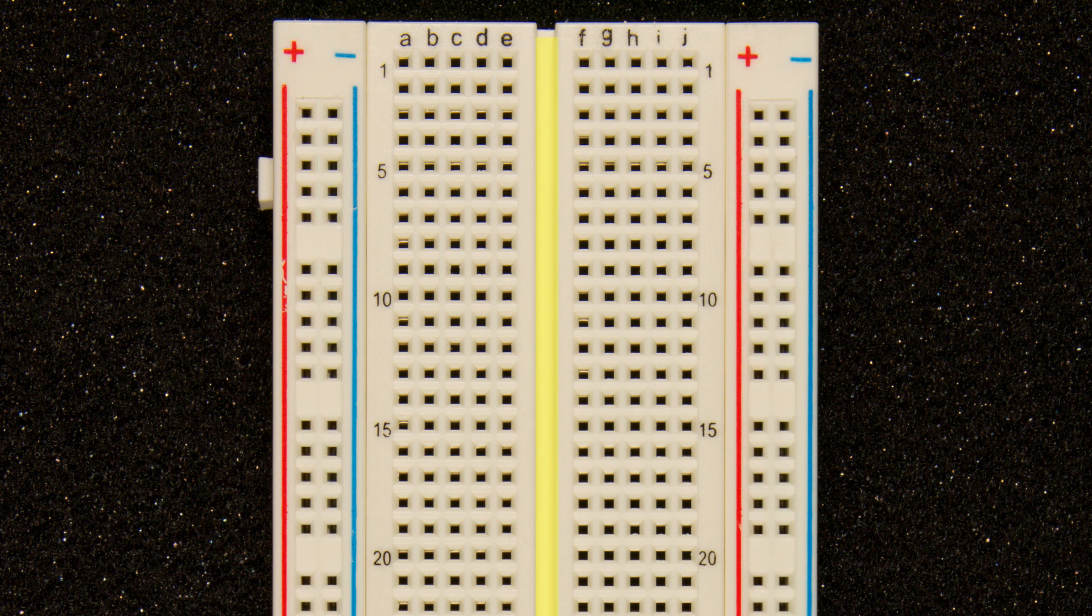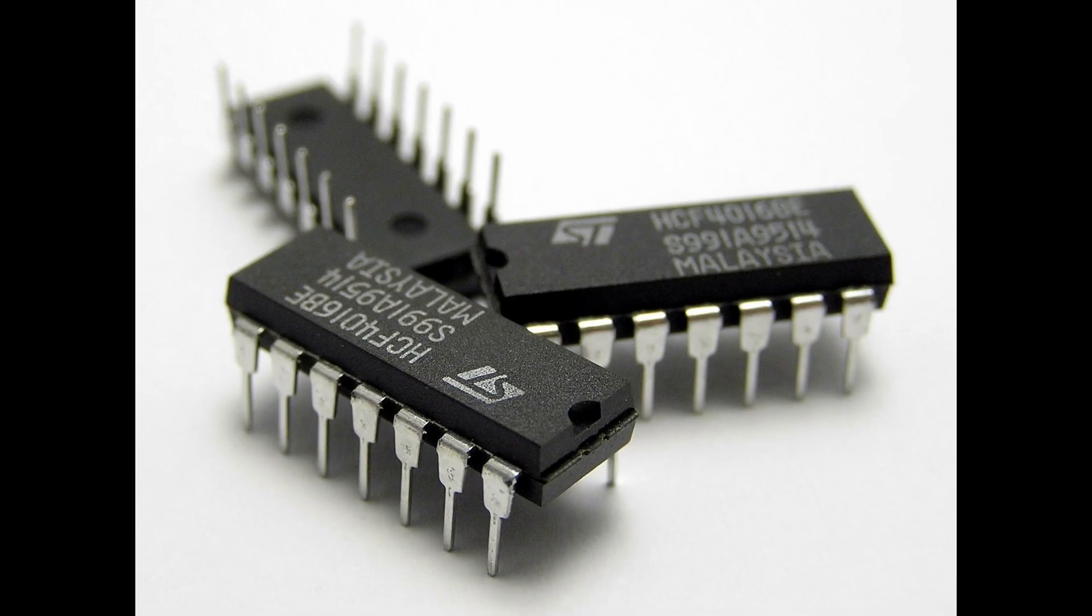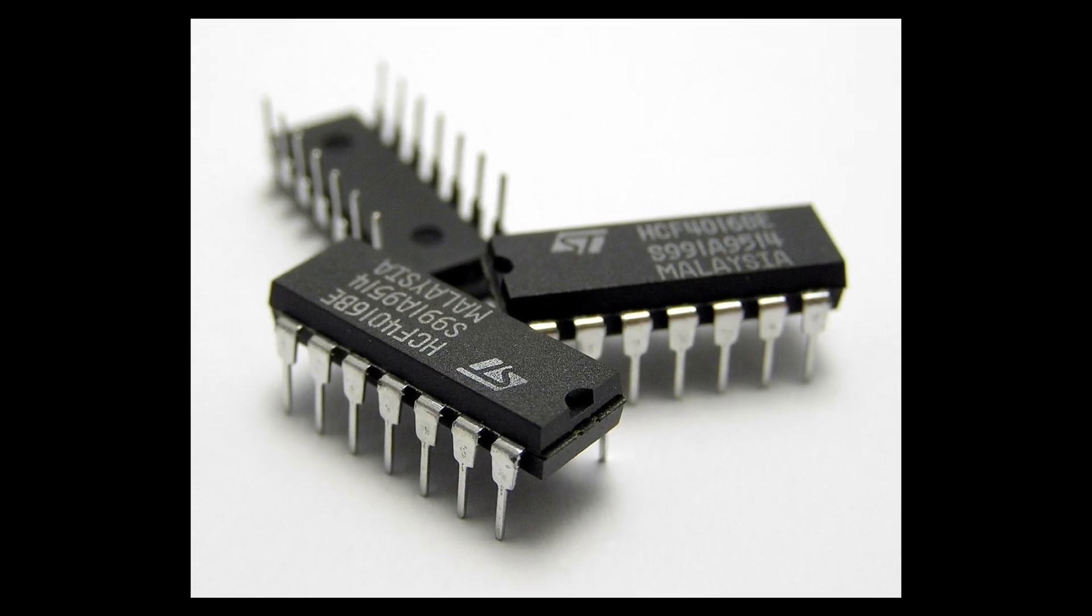Running down the middle of the breadboard, there is a center divider. This separates the rows on either side. It also is perfectly spaced to allow you to use DIP components, which stands for Dual Inline Package.